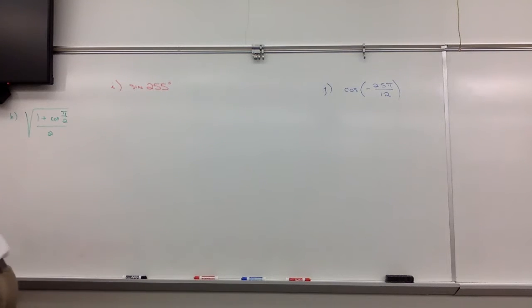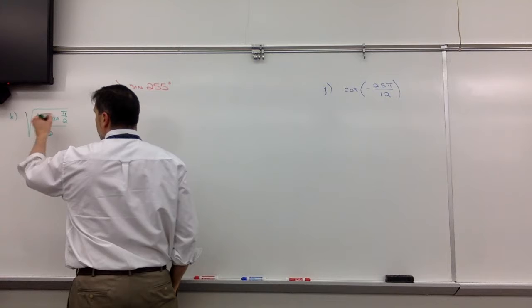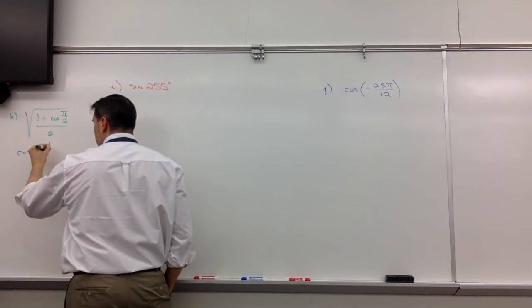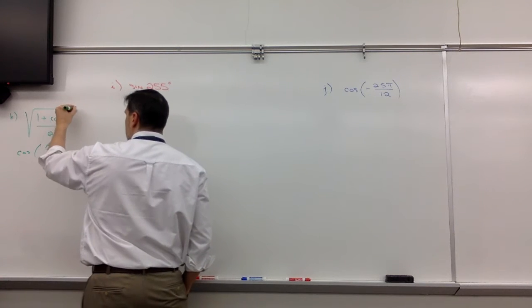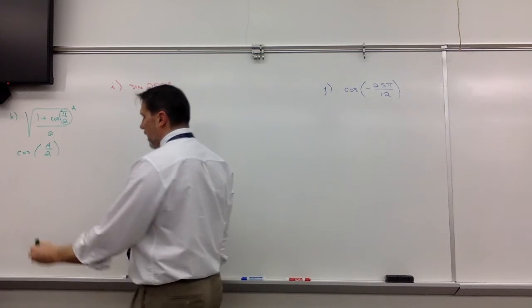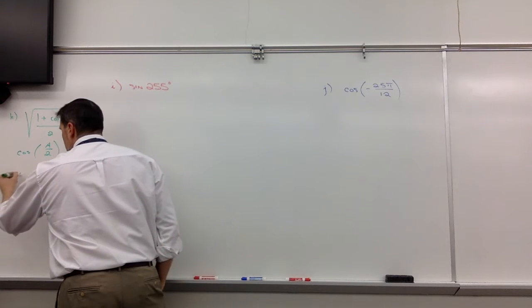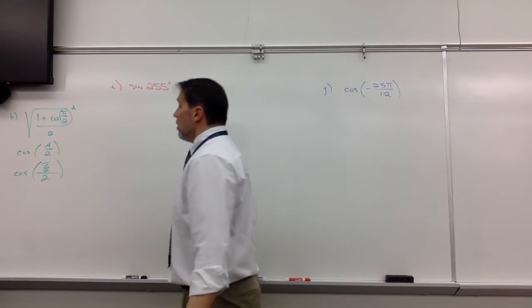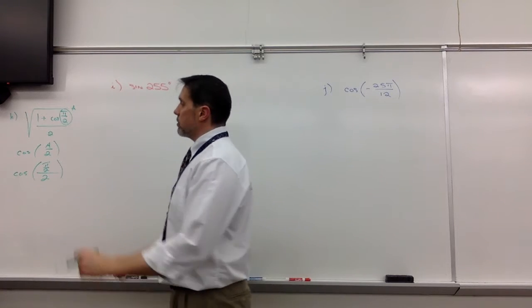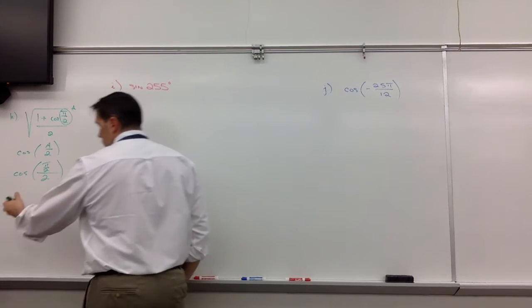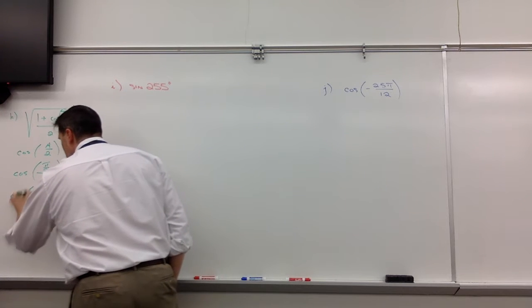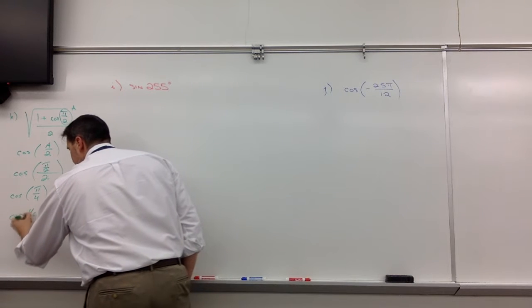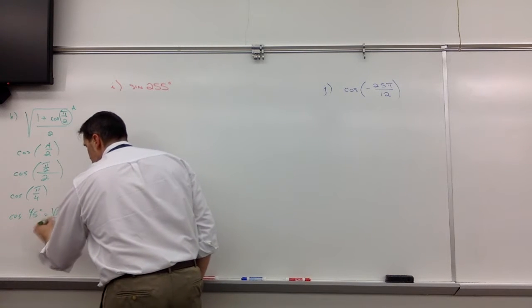For this particular problem, I'm going to say, okay, 1 plus cosine. That has the feel of the cosine half angle formula. So if that plays a role of A, we're going to take pi halves divided by 2. So that's cosine of pi halves divided by 2, which is pi halves divided by 2, or pi halves times 1 half. In other words, cosine of pi fourths. Pi fourths, 45 degrees, and the cosine of 45 degrees is the square root of 2 over 2.